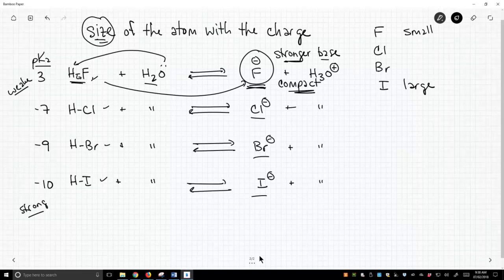Chloride is larger, quite a bit larger. And because of that size, that negative charge is less concentrated, it's more diffuse. This then is a more stable base.